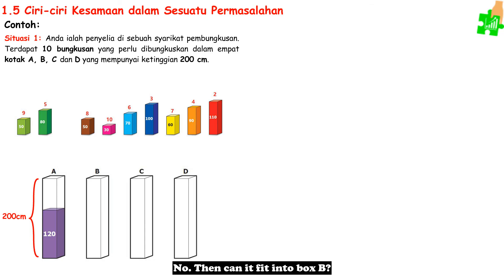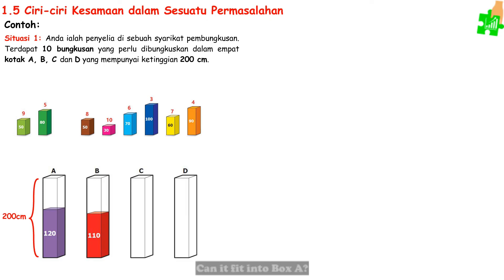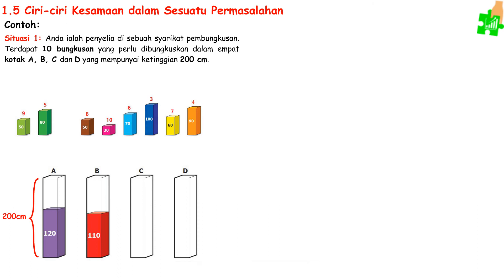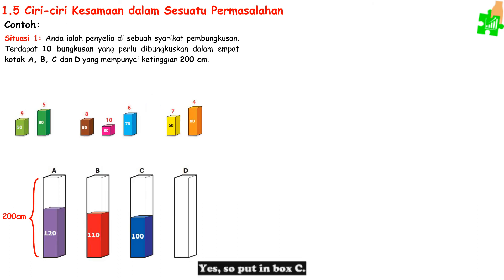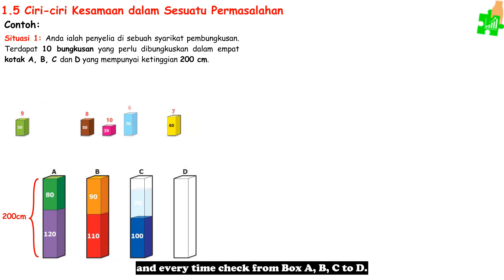Check the second tallest package — can it fit into box A? No. Can it fit into box B? Yes, so put it in box B. Check the third package — can it fit into box A? No. Box B? No. Box C? Yes, so put it in box C. Repeat the same method for packages 4 through 10, checking from box A, B, C, to D each time.